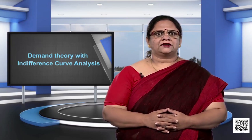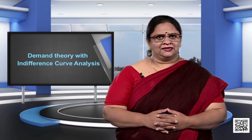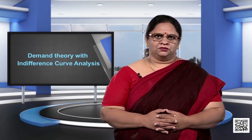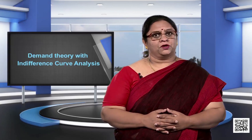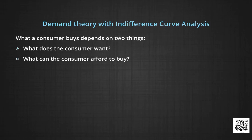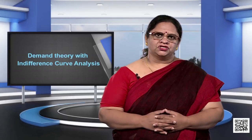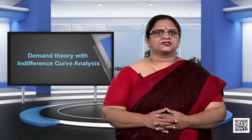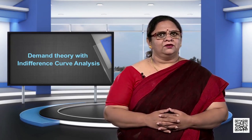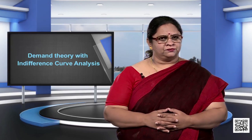Recall that consumer theory analyzes decisions made by consumers regarding what goods to buy and in what quantities to buy them. What a consumer buys depends on two things: one, what does the consumer want, and two, what can the consumer afford to buy? In this module, we examine the first question again — how does the consumer decide what to buy and how much of it to buy?